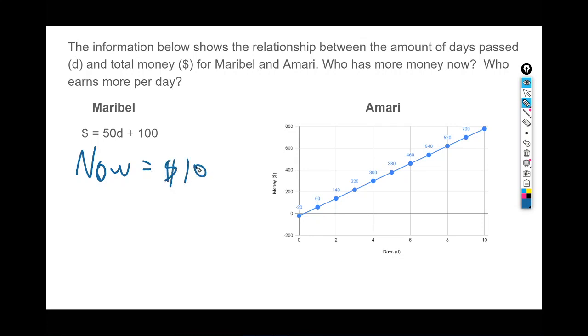Now let's look at Amari. If we go to zero for Amari, it looks like he actually has negative money—he's in debt. That's what having negative money means. So he has negative $20. Now for Amari equals negative $20. The answer here: obviously 100 is bigger than negative 20, so Maribel has more money now.